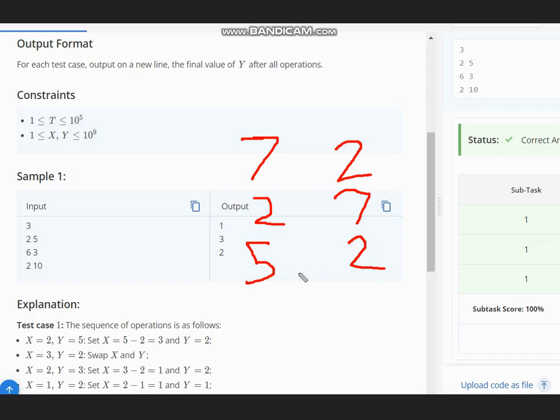Then 5 minus 2 equals 3. And 5... sorry, it must be 2, 5. Then 2 is not greater than 5, so it becomes 3, 2.